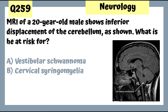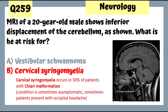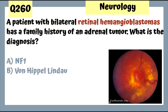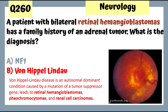Question 259: MRI of a 20-year-old male shows inferior displacement of the cerebellum — this is Chiari malformation. He is at risk for cervical syringomyelia, which occurs in 30% of patients with Chiari malformation. Question 260: A patient with bilateral retinal hemangioblastomas and family history of an adrenal tumor has von Hippel-Lindau disease, associated with pheochromocytomas and renal cell carcinomas.